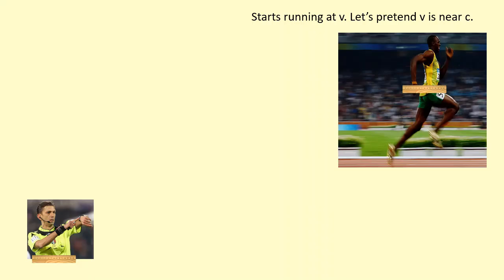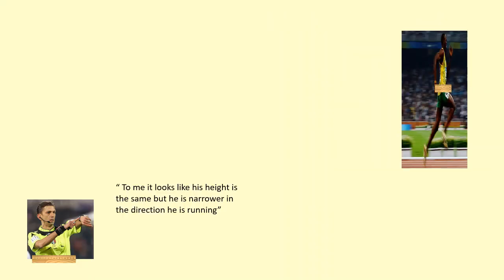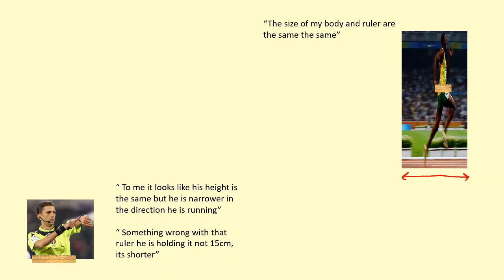At this point, the lineman will notice something strange. He will notice that Usain Bolt has gotten narrower in this direction. His height is the same but he's narrower, so is the ruler. The ruler doesn't look 15 centimeters anymore, it looks shorter. But of course to Usain Bolt, he thinks his width and his ruler is the same size.